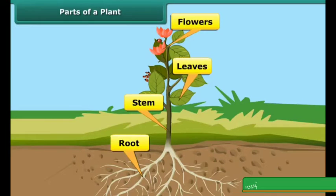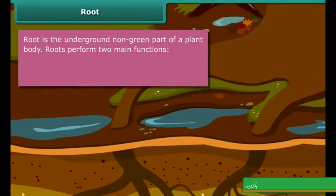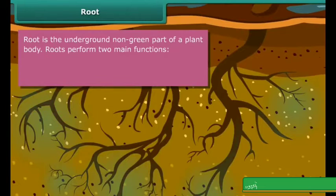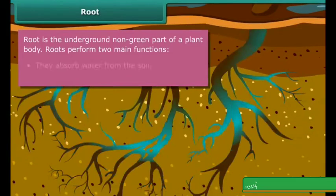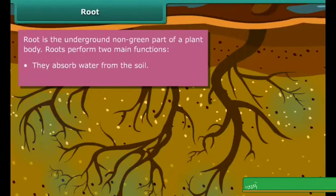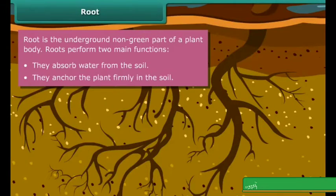Different parts of a plant serve different purposes. The root is the underground non-green part of a plant body. Roots perform two main functions: they absorb water from the soil, and they also anchor the plant firmly in the soil.